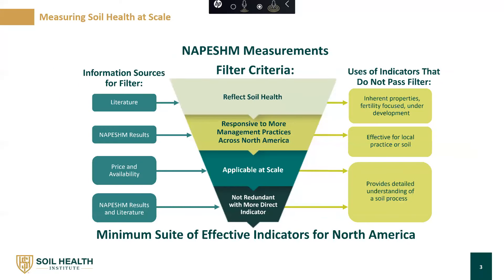How do we go from over 30 different potential indicators to our minimum suite? We used a filtering process. First, we focused on only evaluating soil health measurements, removing those related to inherent soil properties and fertility measurements. Next, we removed measurements that were less responsive to soil health management than their peers. After that, we talked to folks to determine which measurements were feasible to analyze at the commercial scale. Finally, we removed measurements that were redundant in terms of information provided by the indicators.